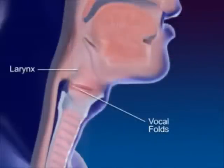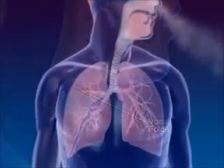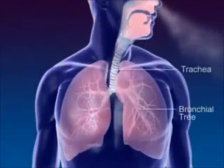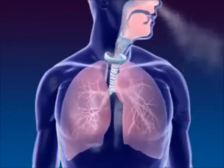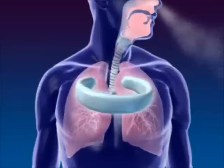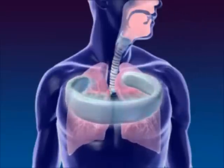The trachea, or windpipe, connects the larynx to the bronchial tree. The cartilage rings of the trachea prevent the trachea from collapsing.